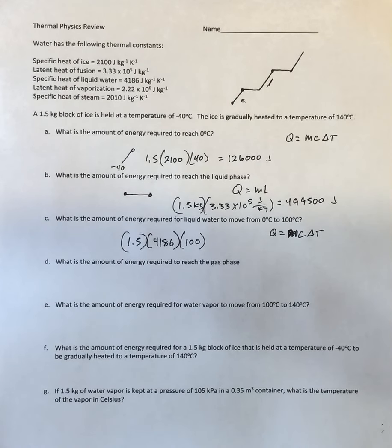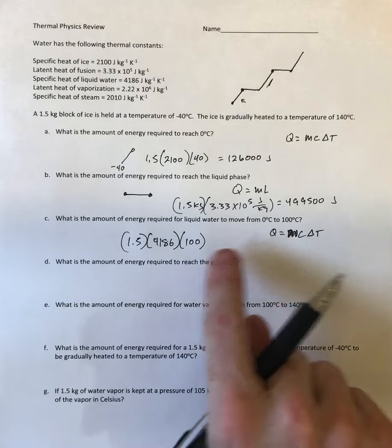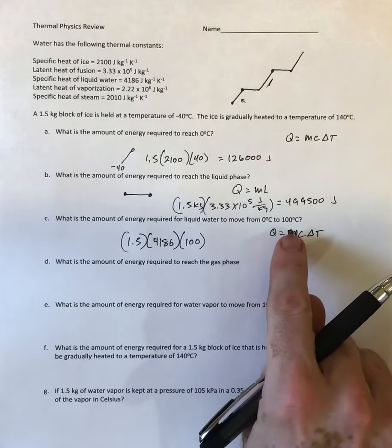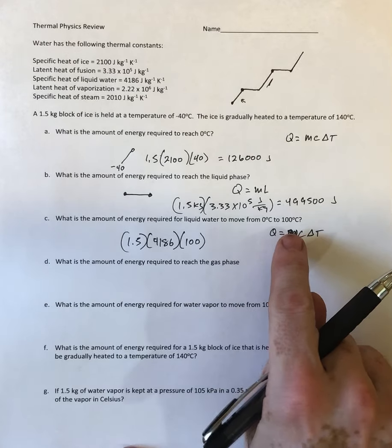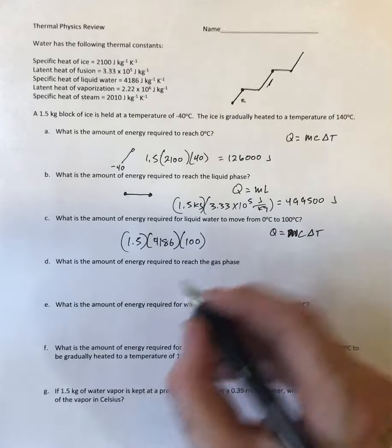100 times 4186 times 1.5. Remember that this is just the change in temperature, so you're not actually putting in a specific temperature, just taking the final minus the initial. In this case I have 627,900 joules of energy.